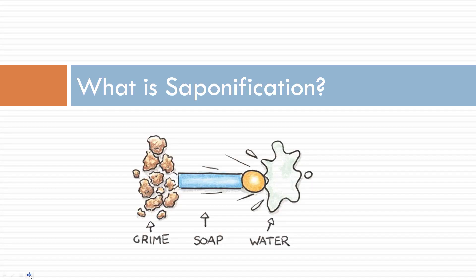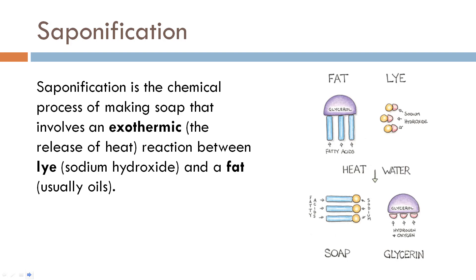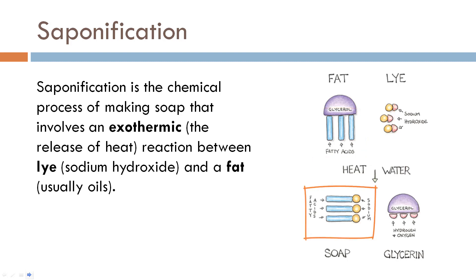The first question we need to answer is: what is saponification? Most of you are probably familiar with this but it bears reviewing. Saponification is the chemical process of making soap that involves an exothermic reaction between lye and fat. We are introducing heat to create this reaction, and what happens is the fatty acids from our fat attach to the sodium from our sodium hydroxide, and that is the chemical composition of soap. What is left over is glycerin — this is how we get soap.